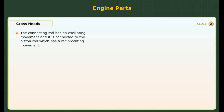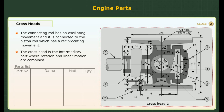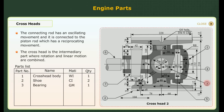Cross head. The connecting rod has an oscillating movement and it is connected to the piston rod which has a reciprocating movement. The cross head is the intermediary part where rotation and linear motion are combined. It is made in various forms and is attached with a piston rod by the cotter.